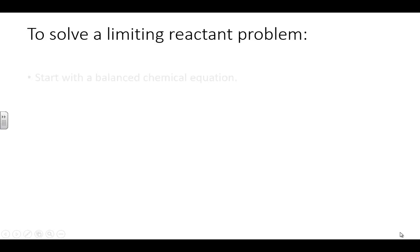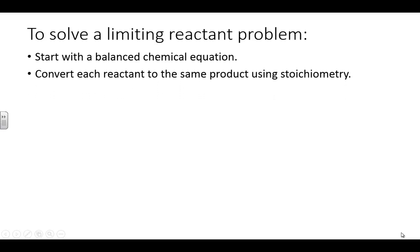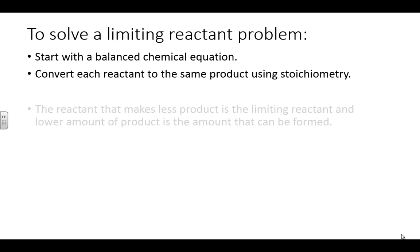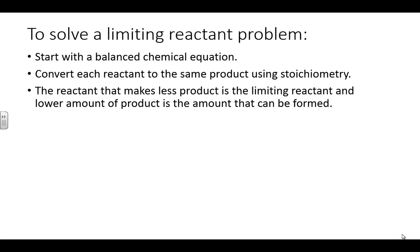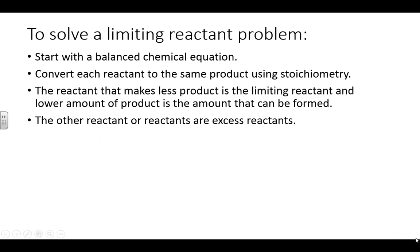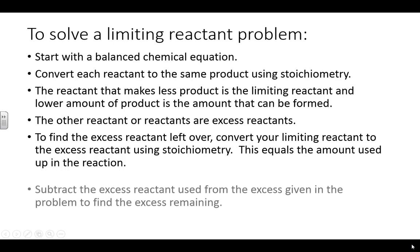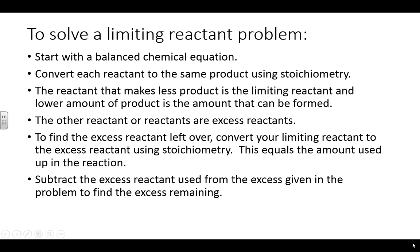To solve a limiting reactant problem: start with a balanced chemical equation to do your stoichiometry. Convert both reactants to the same product — so at least two stoichiometry problems to solve. The reactant that makes less product is the limiting reactant, and that lower amount of product is all that can form. The other reactant is in excess. To find how much is left over, convert your limiting reactant to the excess reactant, subtract that amount from the amount you were given, and you'll find how much does not get used. Then circle your answer and celebrate.